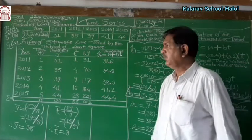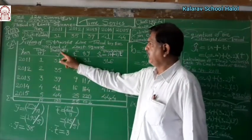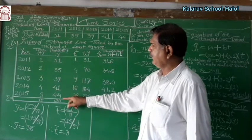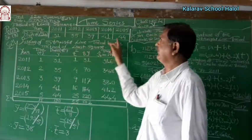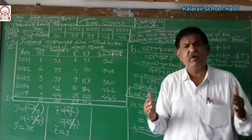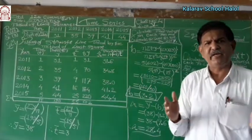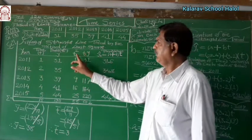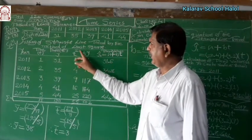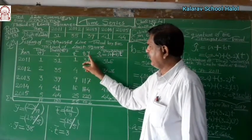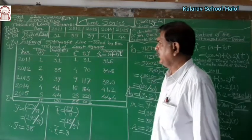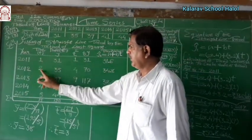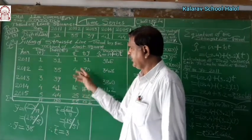Data Y of profit in lakhs of rupees: 31, 35, 39, 41, 44 — the given data. Whether it is production, sale, profit, turnover, or whatever you need. Then prepare the column of T-squared and T into Y. T-squared: square of 1 is 1, square of 2 is 4, square of 3 is 9, and so on.